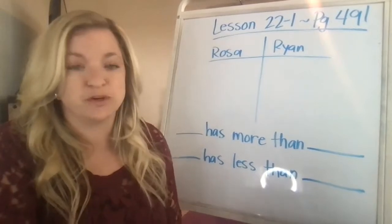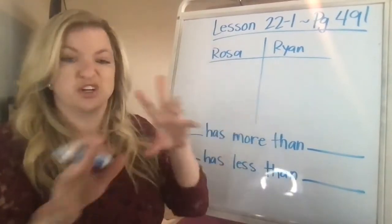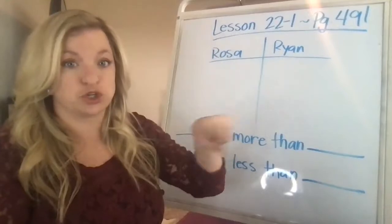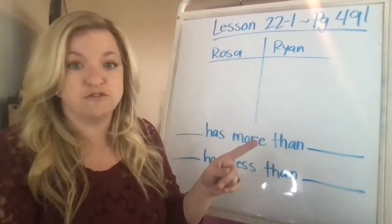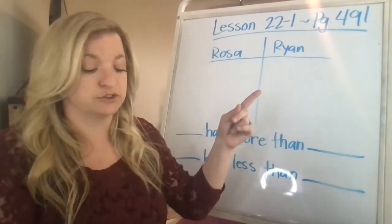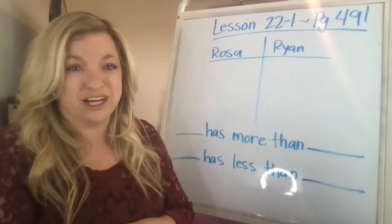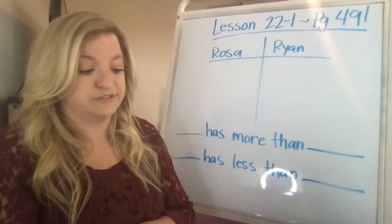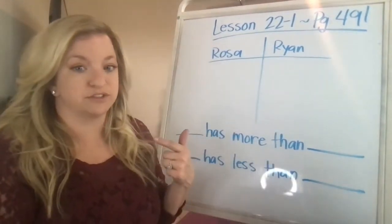So the first thing you're going to do whenever you have a word problem, which is numbers thrown into all those words, you're going to circle the numbers. So don't forget to circle the numbers. You're going to circle 24 for Rosa and 37 for Ryan. It also says try it. So I want you to go ahead and just try it on your own. And if you want, hit pause and then play to see how I would solve it.